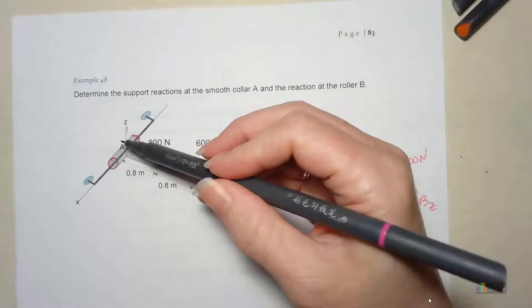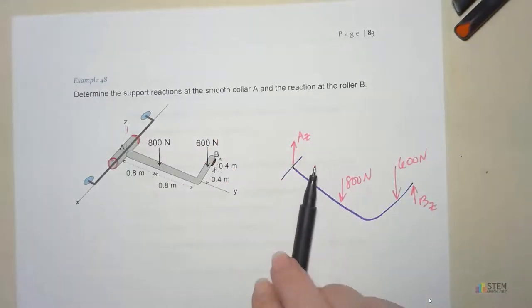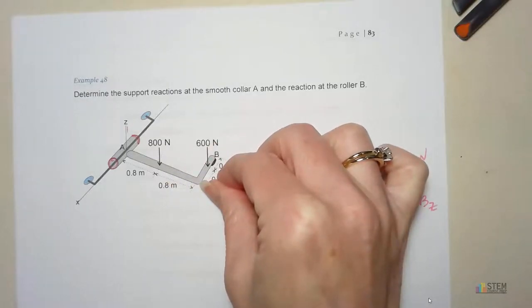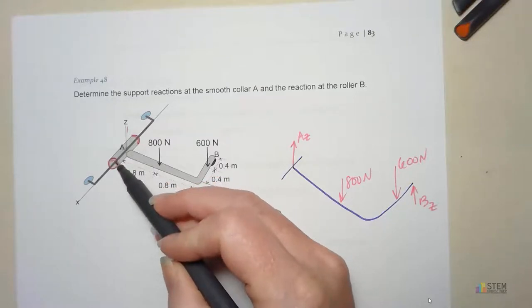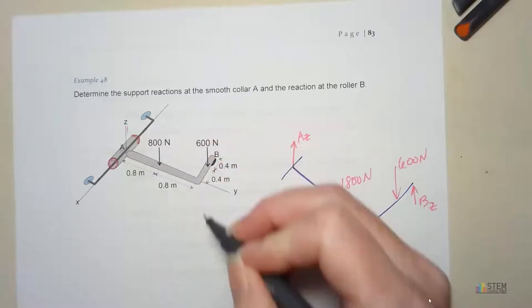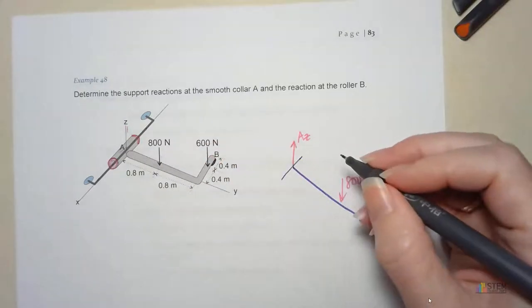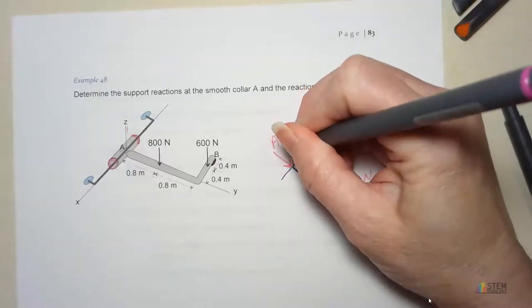Now can we translate in the Y direction? Think about applying a force here at the end and trying to pull it this way. Is it going to go anywhere? No, right? Because we've got this collar here. It's wrapped around this guide. So there is no possibility of moving in the Y direction. That means we need to have a force applied. Let's call that AY.